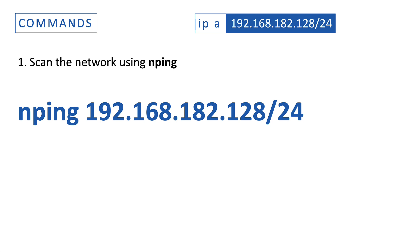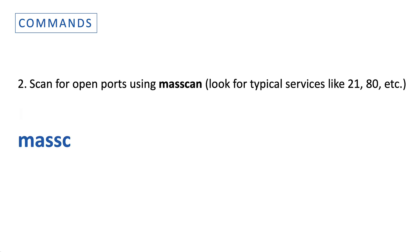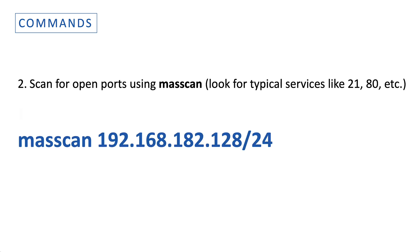Assuming I ran ip a and got the network address, nPing without any options will do the job. Using masscan, I would add the -p option and add the ports that I'm interested in, separated by a comma.